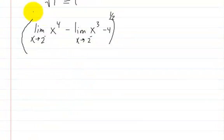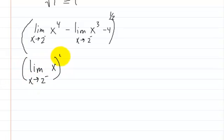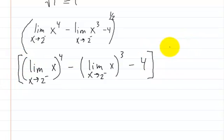Now we separate and raise the exponents after getting the values. So we write the limit of x as x approaches 2 from the left, to the fourth power, minus the limit of x as x approaches 2 from the left, cubed, minus 4 — all square rooted at the end.